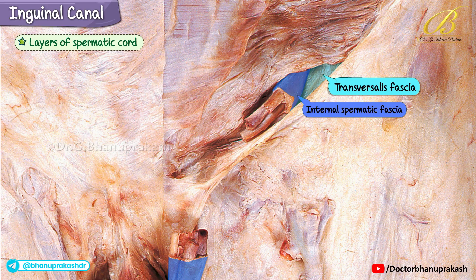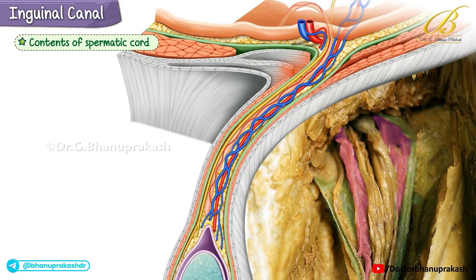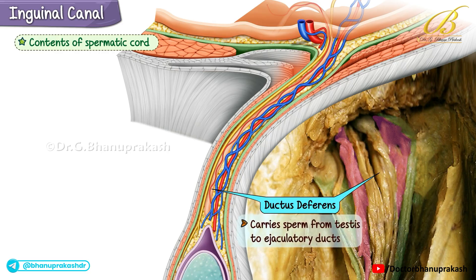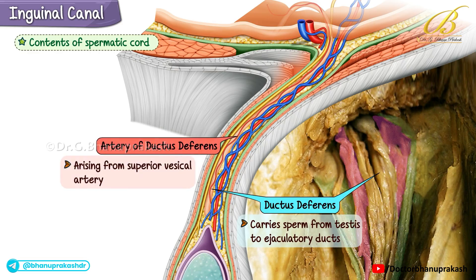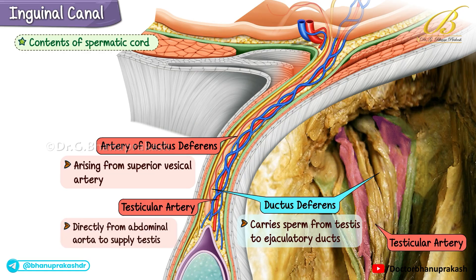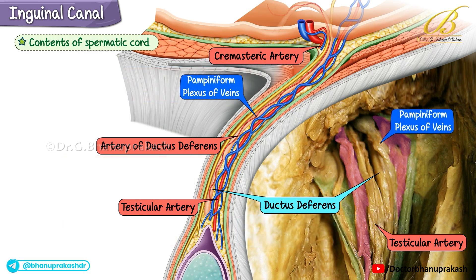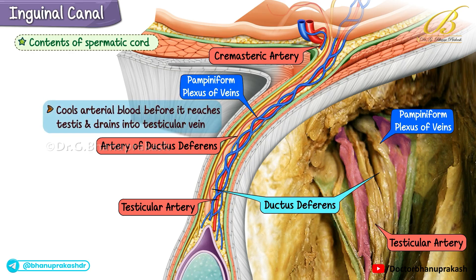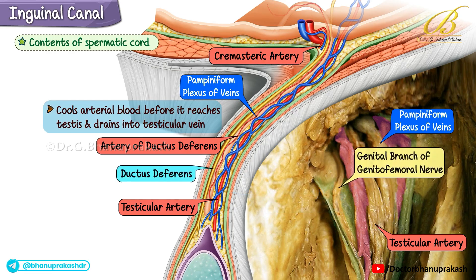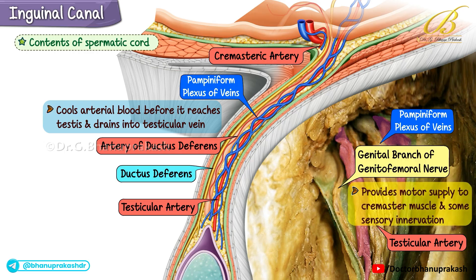Inside the spermatic cord run several important structures: the ductus deferens, which carries sperm from the testis to the ejaculatory ducts; the artery of the ductus deferens, arising from the superior vesicle artery; the testicular artery, coming directly from the abdominal aorta to supply the testis; the cremasteric artery, branching from the inferior epigastric artery; and the pampiniform plexus of veins, a network that cools arterial blood before it reaches the testis and drains into the testicular vein.